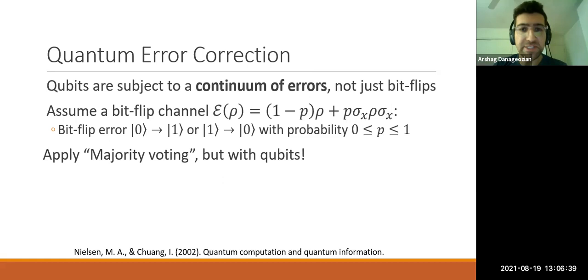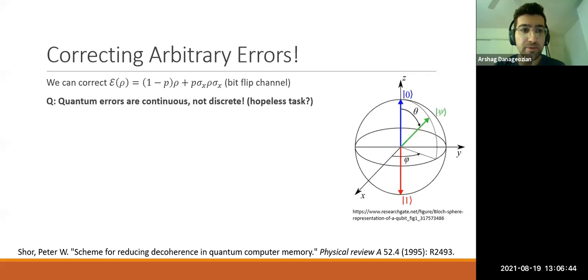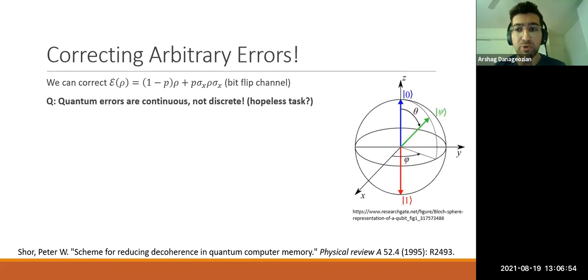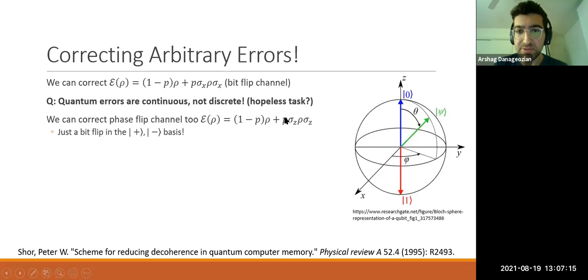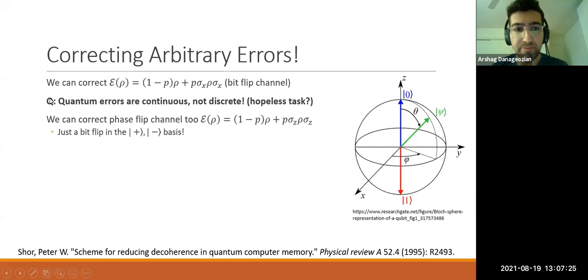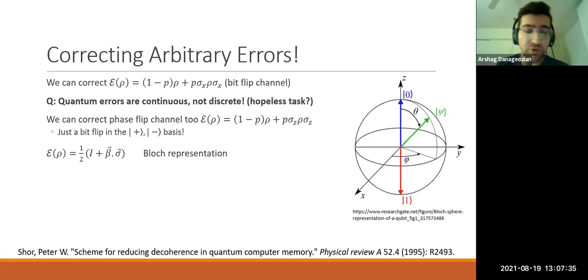We have to worry about what to do when you get any error except a bit flip error in the quantum case. Initially it might seem like a hopeless task to correct a continuum of errors, but it turns out it's possible in a surprisingly simple way. You can correct not only a bit flip error but also a phase flip error. The reason is that the phase flip error, written with Pauli sigma-Z rather than sigma-X, is a bit flip error in the plus and minus basis rather than the computational basis. This realization allows you to correct phase flip errors the same way you correct bit flip errors.